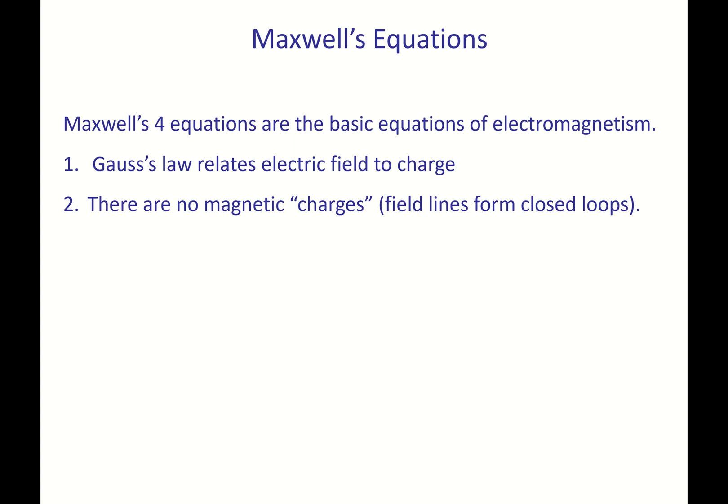The second Maxwell's law tells us that there are no magnetic charges. What that means is you can't have a north pole without having a south pole, so magnetic field lines always go out of a north and into a south. You can't have a field line just coming from one spot.